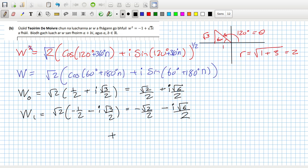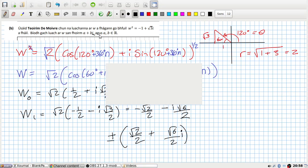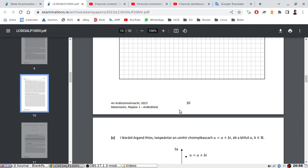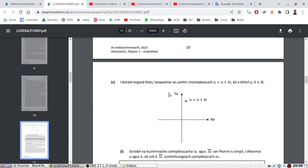So that looks like the two answers there. Or if you prefer, you can just say it's plus or minus root two over two plus i times root six over two. Or if you want to be picky about it, put the i at the back to match it up exactly with what they want. Okay, and that's the part B, one Argand diagram.